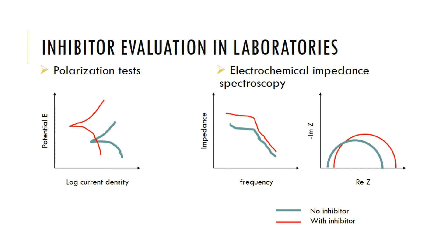The blue plot has a much greater corrosion current density compared to the red plot, which is the Tafel plot for the sample in an electrolyte with inhibitor. Similarly, in the EIS plots, for the Bode plot of impedance versus frequency, we see that the overall impedance of the sample in a solution with inhibitor is much greater than the overall impedance of the sample in an electrolyte without any inhibitor.